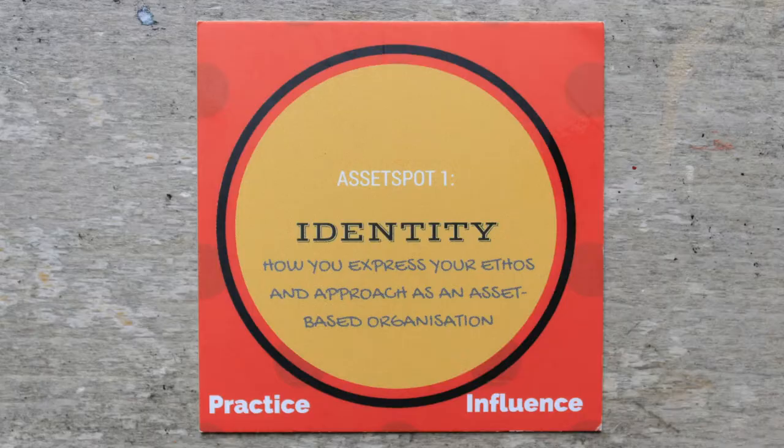So how do we turn asset-based thinking into practice? Working with the Paul Hamlyn Foundation and the grantees of the Youth Fund, I developed a framework called the Asset Spots, which offers 10 different areas in which you might explore, grow, and develop an asset-based approach. The first spot is about identity — the identity of an organisation, what it stands for, that expresses an asset-based vision, including how it talks about itself, its vision and values, and its particular approach.